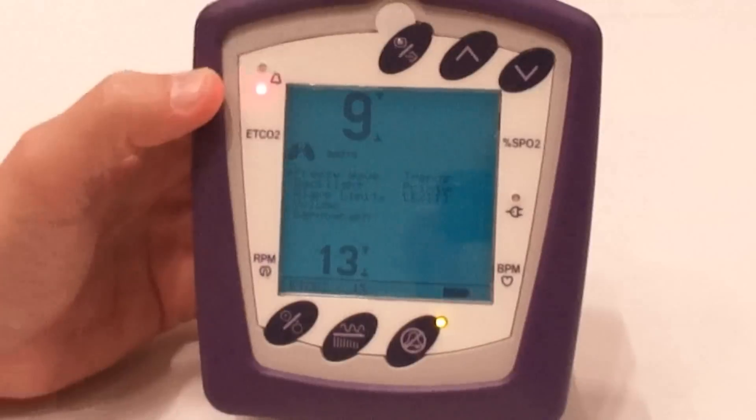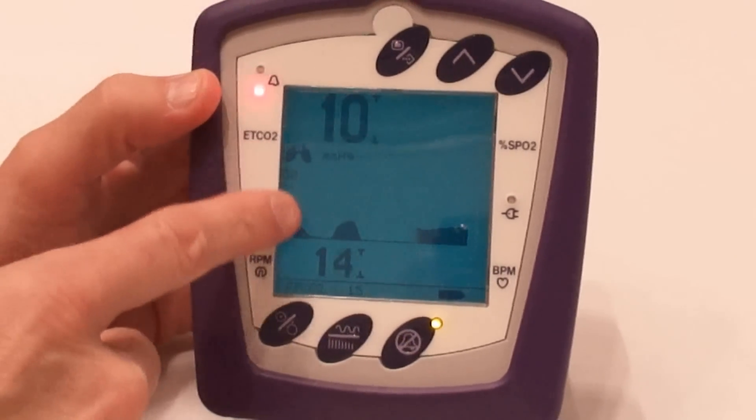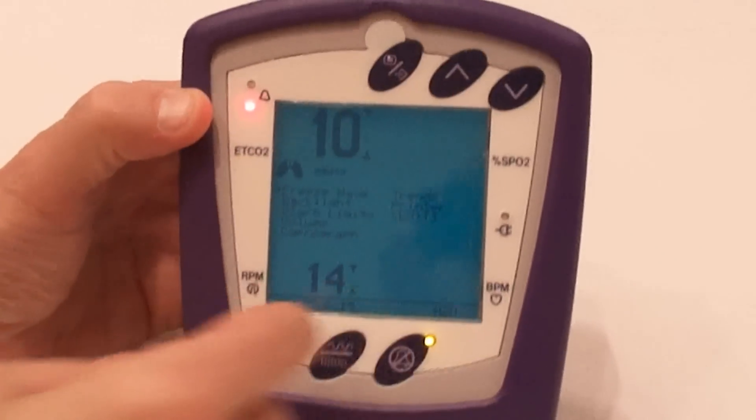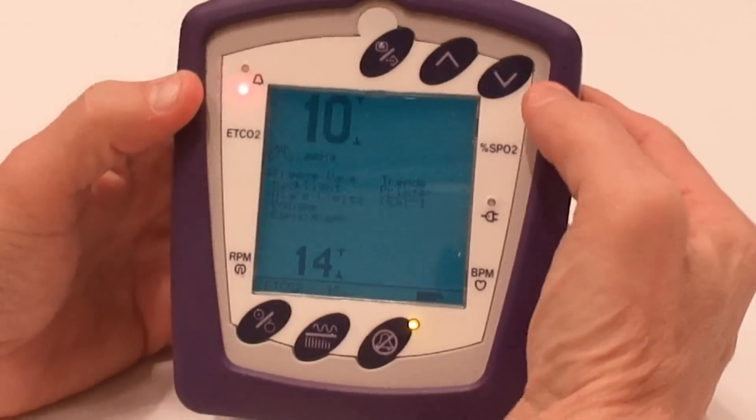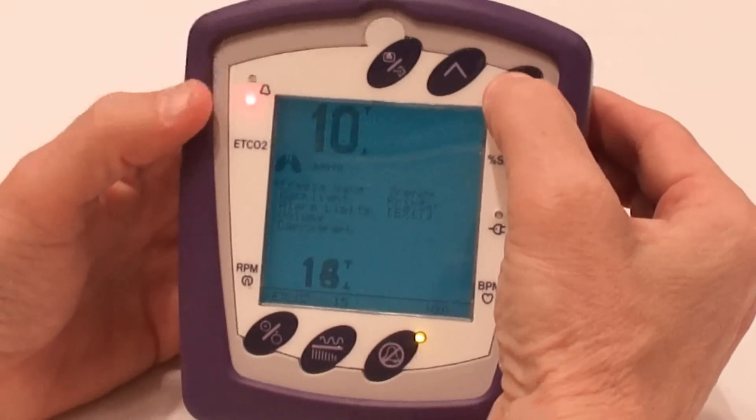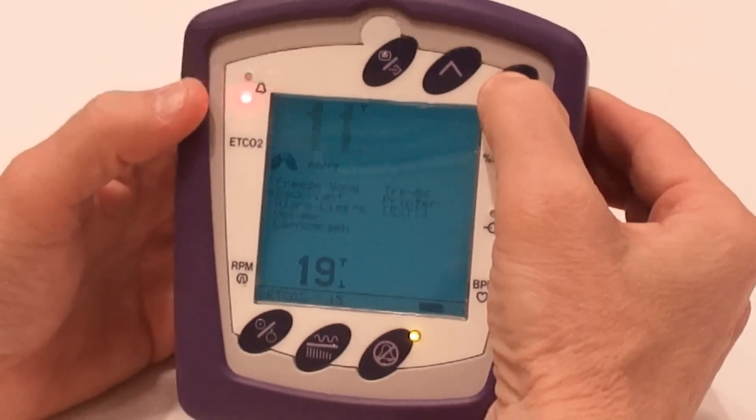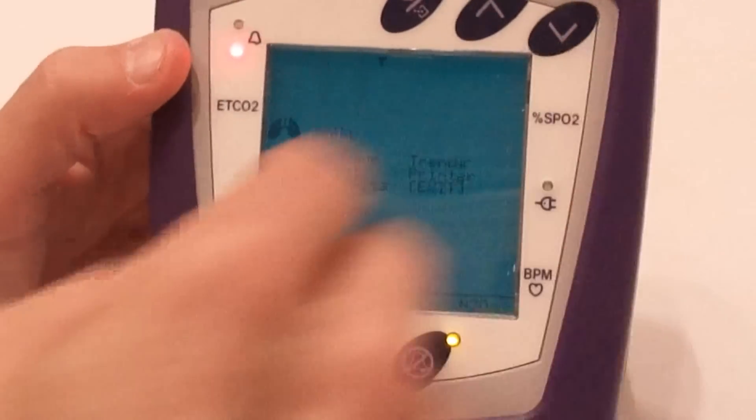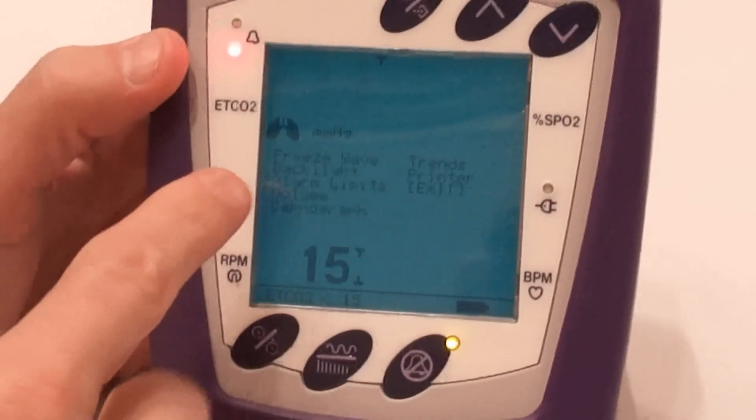That silences your alarms. Now from the menu screen there, you can adjust and go to your backlight. You can adjust the backlight of it, the contrast. You can also control the alarm limits. Okay.